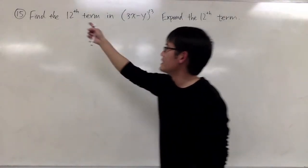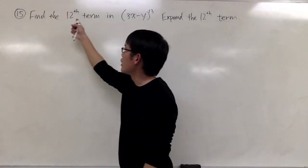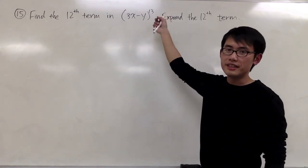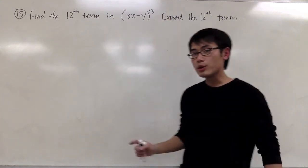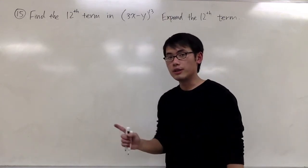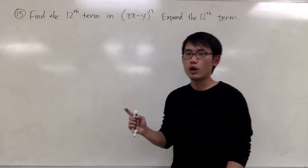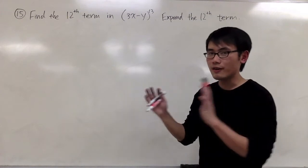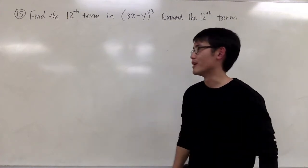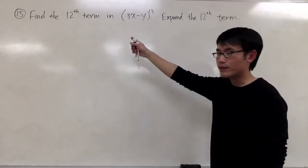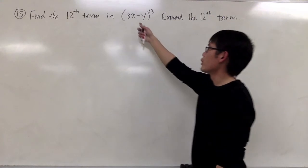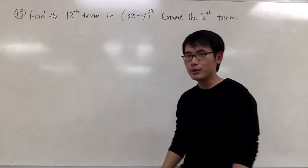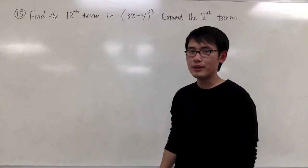For question number 15, it says find the 12th term in the expansion of 3x minus y to the 13th power. Even though the question is only asking us for one term, the 12th term, in order for this to make sense, let me just write down a few things. Of course, you don't write down this 13 times and multiply it out — we are going to use the binomial expansion formula.